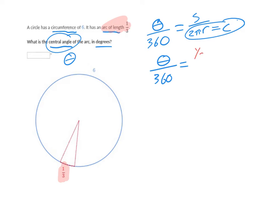We do know what the arc length is. Look, they showed us that the arc length is one-third, so I can plug that in as one-third. And they also told me what the circumference is. Circumference is 6. That's this whole distance around.